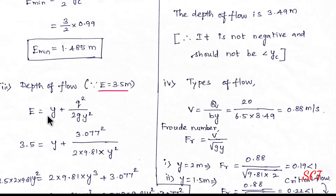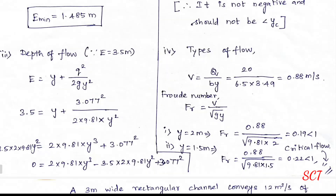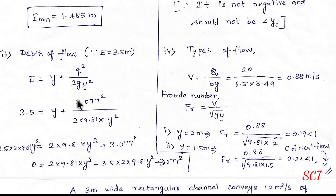Specific energy formula: E equals y plus q² divided by 2g·y². E equals 3.5, q equals 3.007, 2g equals 2 × 9.81. We need to find y. If we solve this, we need to find the y value using trial and error method. This becomes a 3rd degree equation.